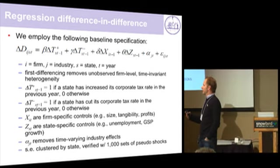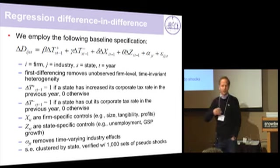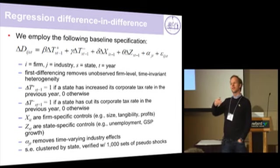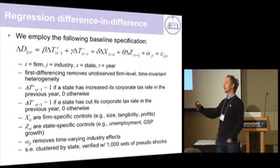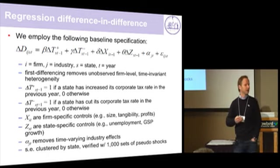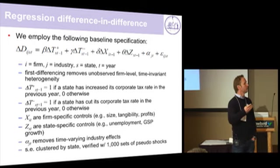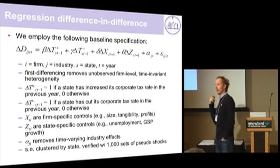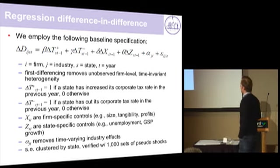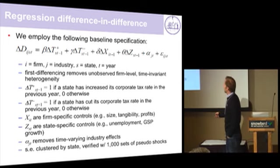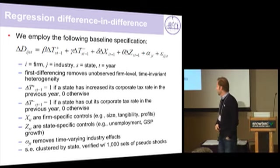We verify the standard errors by doing pseudo-shocks. We do 100,000 random assignments of these tax shocks, so we know the null is true. Then we ask how often in those random events we would see coefficients that resemble ours. In those 100,000 simulations, the answer is never. So it seems that what we're doing is right.